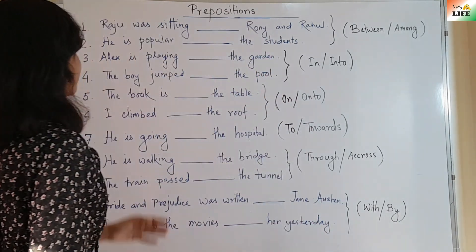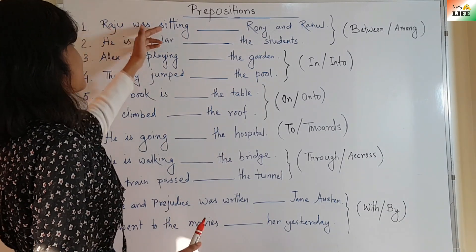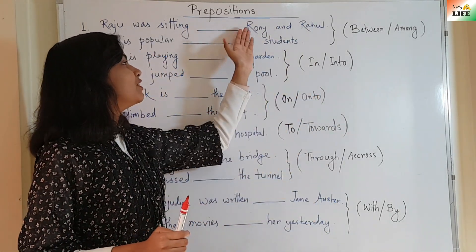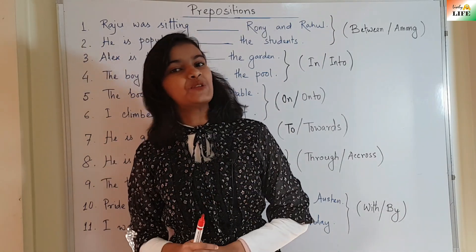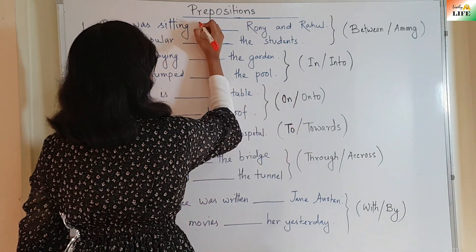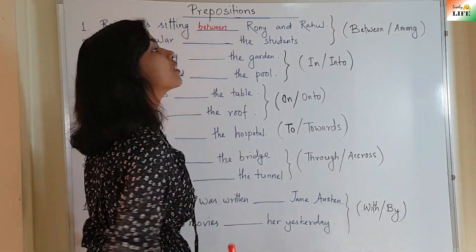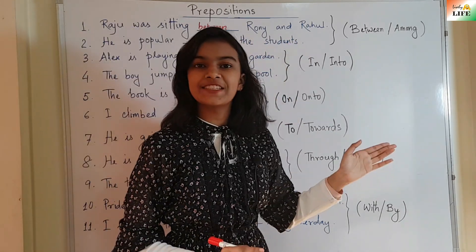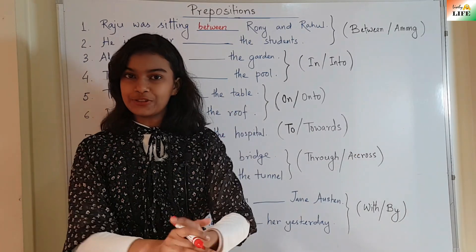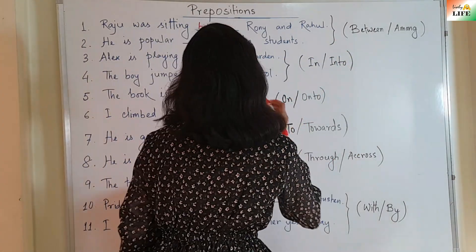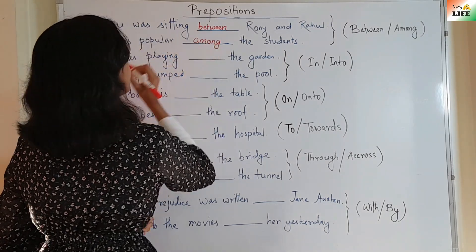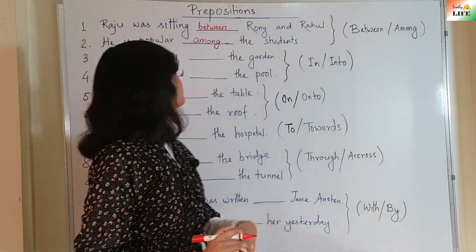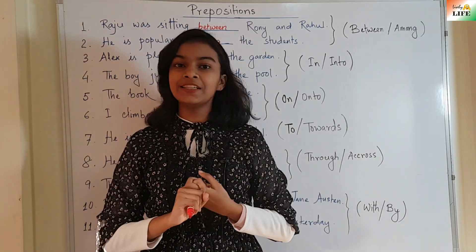Now, take a look at these two sentences. Raju was sitting — Ronnie and Rahul. Here, how many people are there? Ronnie and Rahul — two people. So we will use 'between'. The next one is: he is popular — the students. 'The students' means a lot of people, more than two, so we use 'among'. So: Raju was sitting between Ronnie and Rahul, but he is popular among all the students.